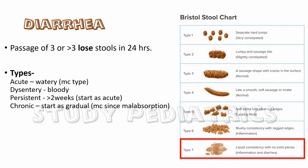People are often confused between persistent and chronic types of diarrhea. To differentiate them, the word 'acute' should be remembered — persistent diarrhea starts acutely. Chronic diarrhea, on the other hand, starts gradually and continues for a longer period of time, with the most common cause being malabsorption.